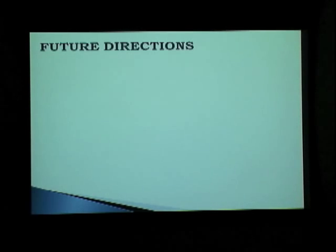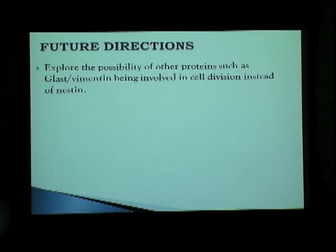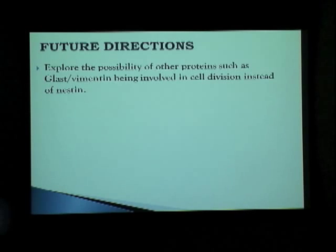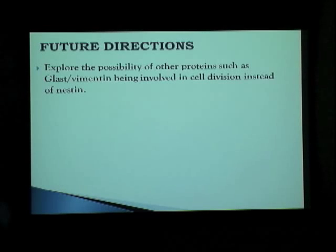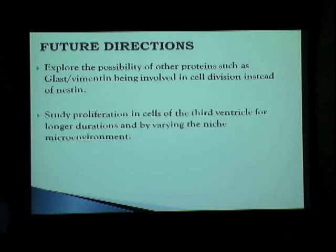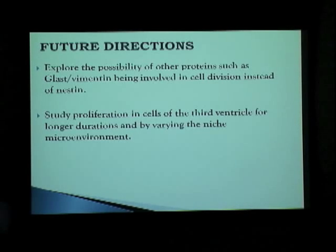So where should we go from here? Firstly, we should explore the possibility of other proteins. We shouldn't keep ourselves constrained to simply looking at nestin and proliferation. We should look at GLAST, which is an immature ependymal cell marker. We should also look at vimentin to see if maybe it is involved in cell division.